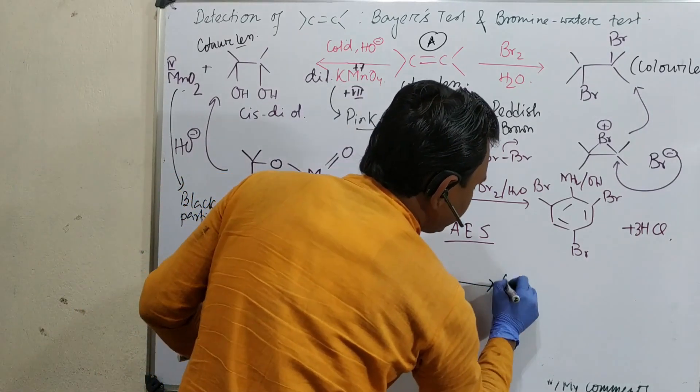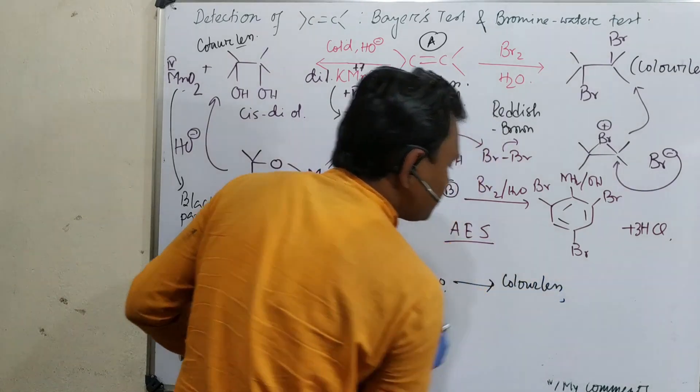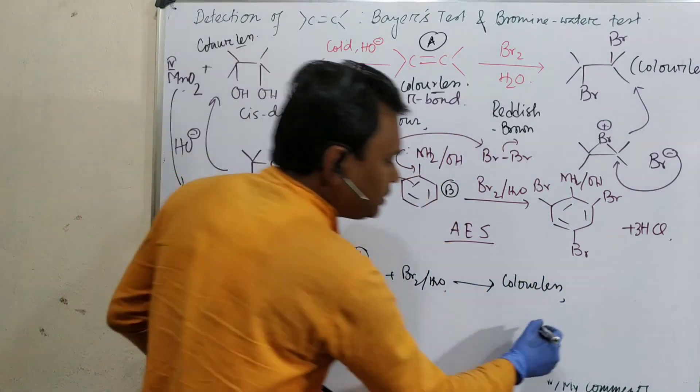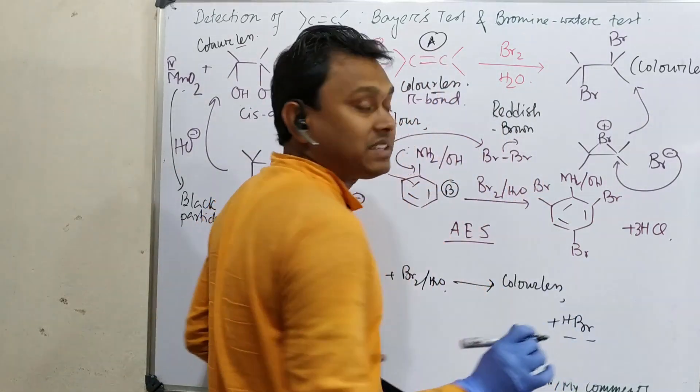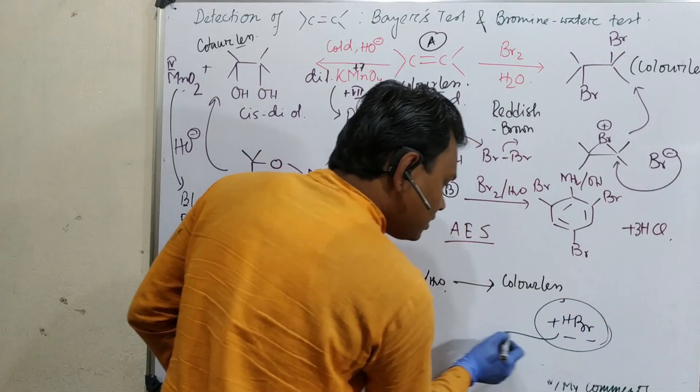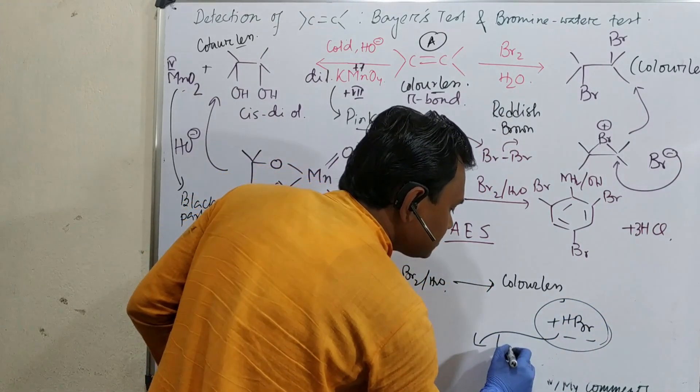Add bromine water and you get colorless. That is the observation. But in case of B there is HBr, but in case of A no acid is produced. So how can you detect this HBr? You can detect this by litmus test.